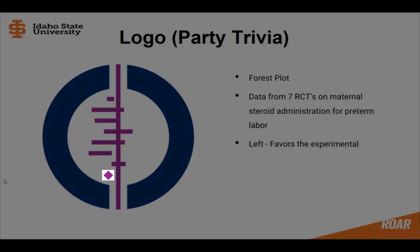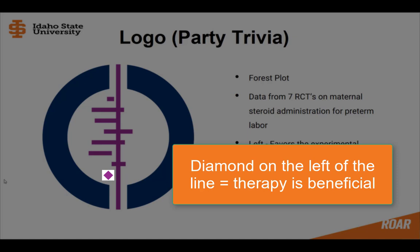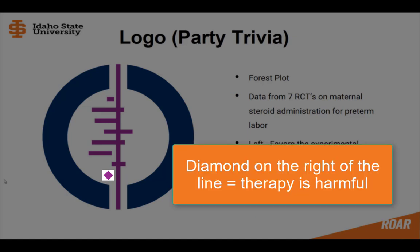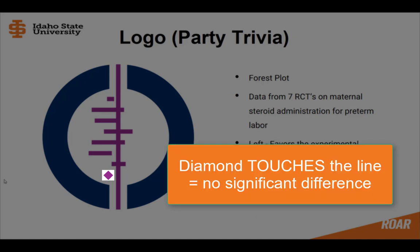The diamond is the statistical average of all the studies. If it falls on the left of the line of no effect, that means the therapy is beneficial. If the diamond falls on the right, it means that the therapy is harmful. If the diamond touches the line of no effect, there's no significant difference found.